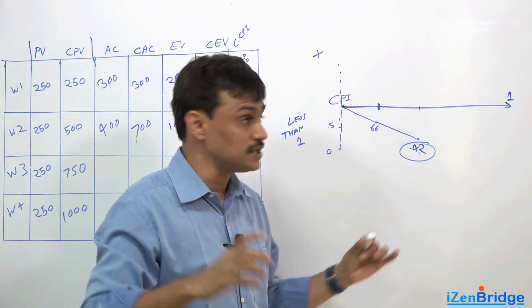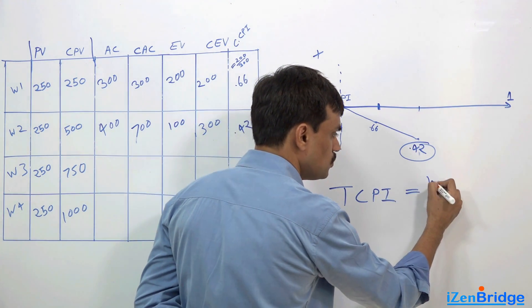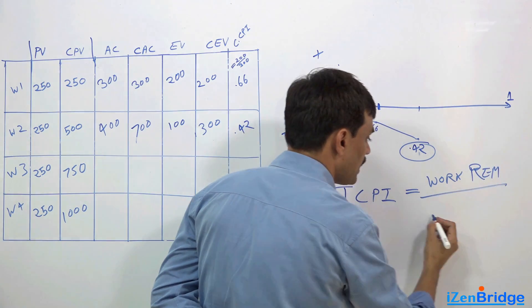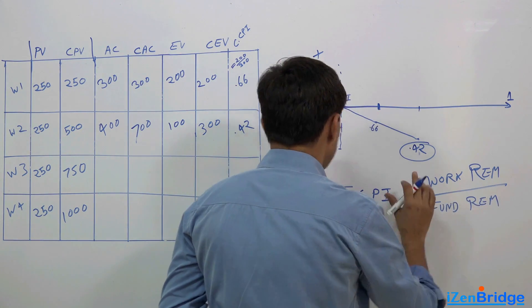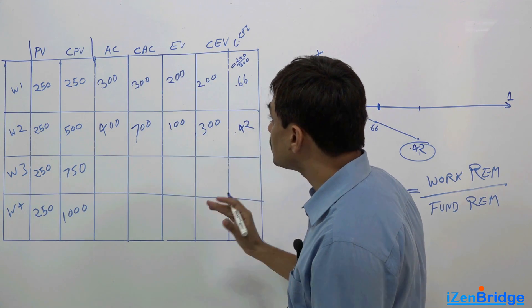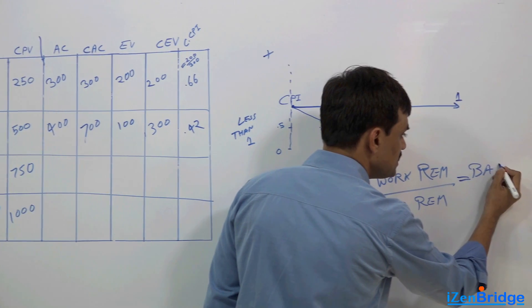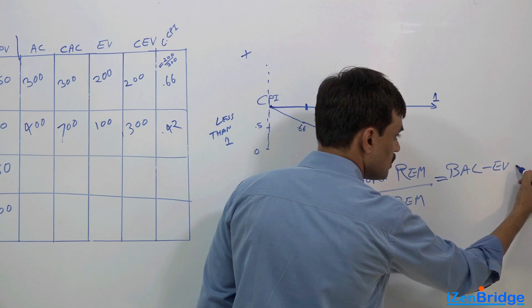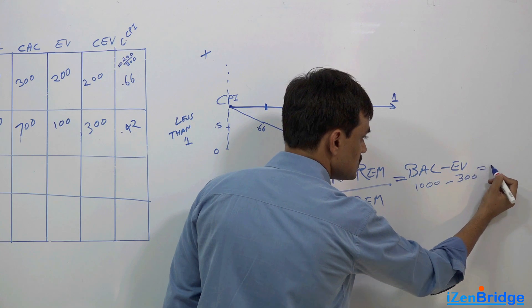Now there could be two situations. We tell that To Complete Performance Index is equal to work remaining divided by fund remaining. Now what is work? By now we have earned work of $300, means our work remaining is $700. So the work remaining is simple: Budget at Completion minus Earned Value. So budget at completion was $1000 and we have done work of $300. So this is $700.